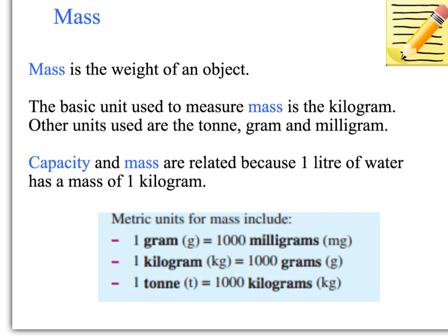So capacity and mass are related because a litre of water, which is a liquid, has a mass of one kilogram. So one litre equals one kilogram. You need to remember that and that will help you to work out the mass of certain objects.